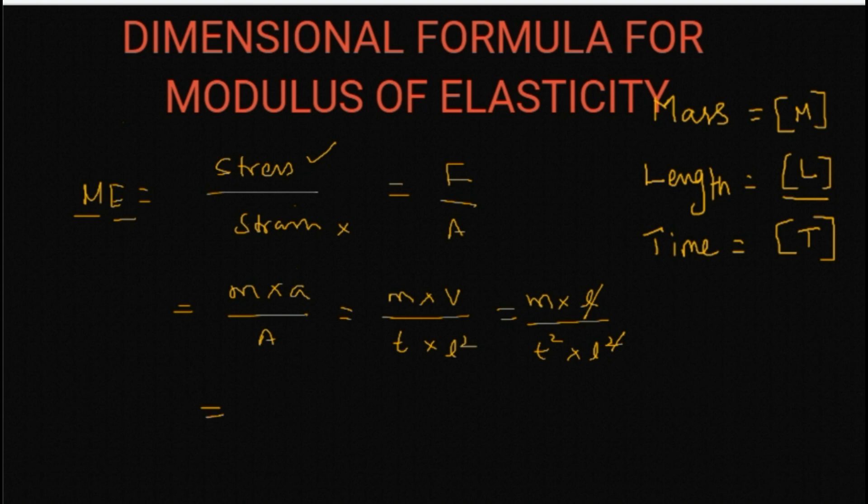So if I cancel one L, I am going to have M T power minus 2 L power minus 1.